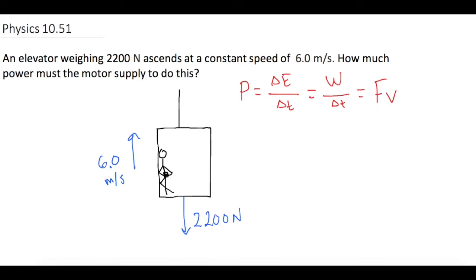So let's use that last one because we have everything given to us. So power is equal to the force, 2,200 newtons, times the velocity, 6.0 meters per second, gives us the power that the motor must supply. The power which it must supply is equal to 13,200 watts.